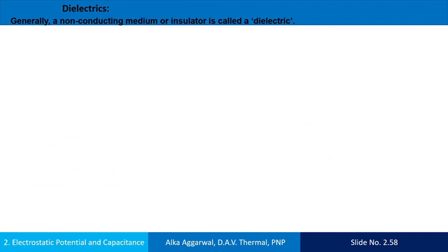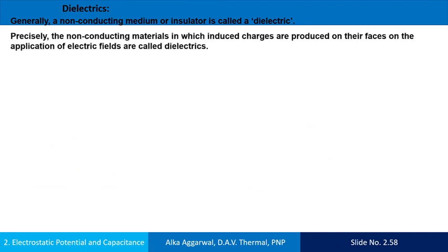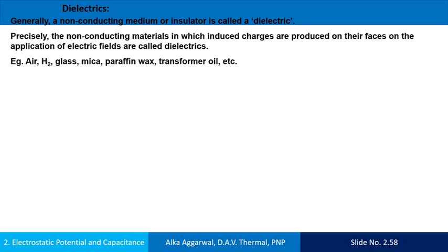Dielectrics: a non-conducting medium or insulator is called a dielectric. Precisely, non-conducting materials in which induced charges are produced on their basis by the application of electric fields are called dielectrics. Examples are air, hydrogen, glass, mica, paraffin wax, transformer oil, etc.